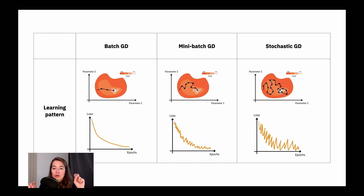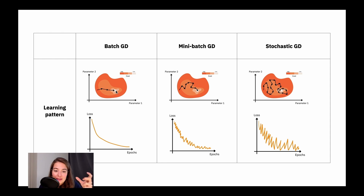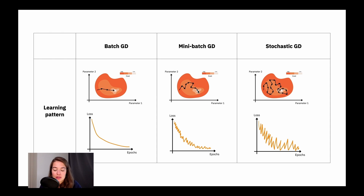A small note: when I say 'converge,' I mean finding the minimum point — the point where the cost is minimum and our model is aware of this. So let's talk about the advantages and disadvantages of each approach.